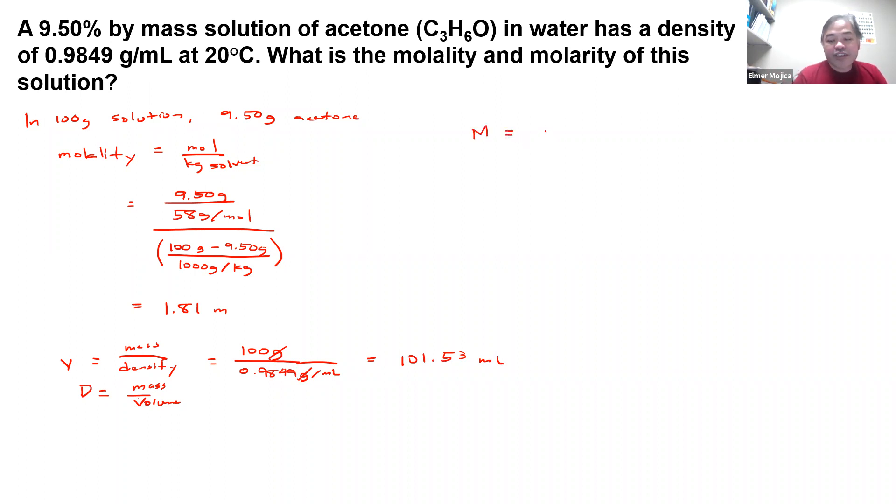Molarity is given as mols per volume in liter. So we can use the one that we use in molarity. 9.50 grams divided by 58 grams per mL, divided by 101.53 mL, divided by 1,000 mL per liter. So you get here around 1.61 mL.